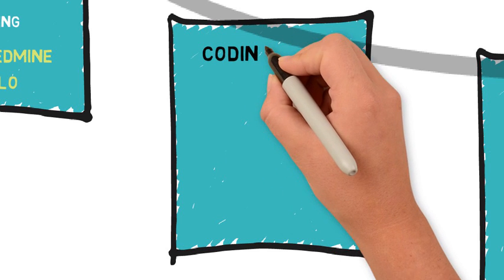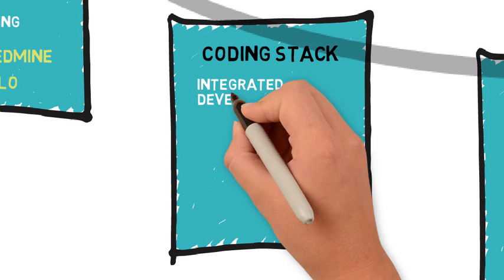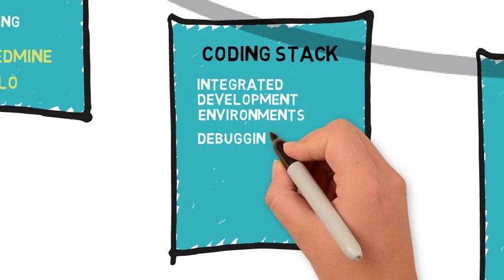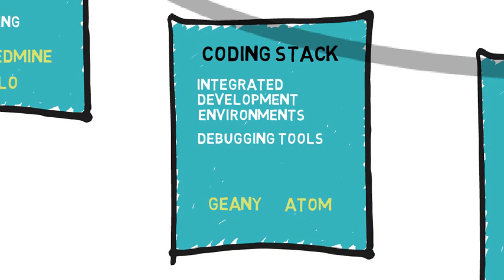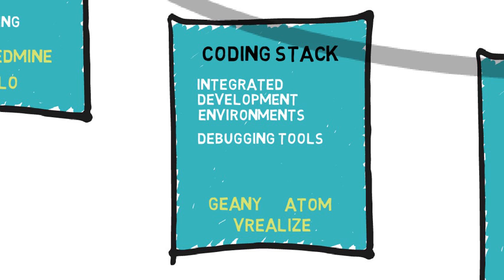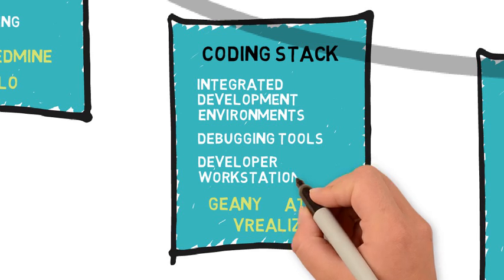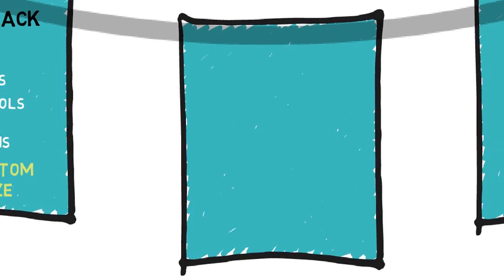Next in the toolchain is the coding stack. The software in this stack is used for the coding effort against the user stories. We have integrated development environments, editors, debugging tools, and unit test tools. Genie, Atom, Eclipse, Microsoft TFS, and vRealize Orchestrator are commonly used tools. Other software in this stack used to support the application development include pre-configured developer workstations and the environments for application unit tests, essentially a set of VM blueprints.